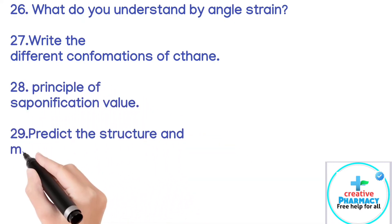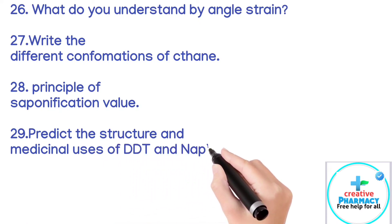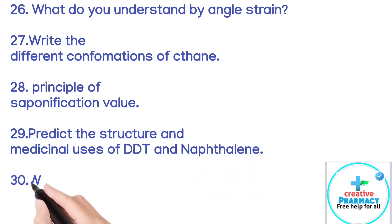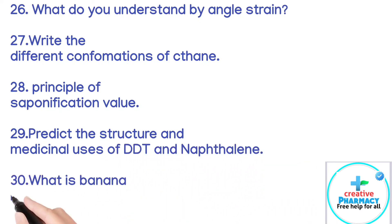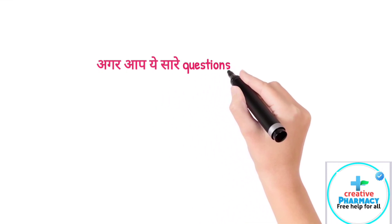Question 28: Principle of saponification value. Question 29: Predict the structure and medicinal uses of DDT and naphthalene. Question 30: What is banana bonding?